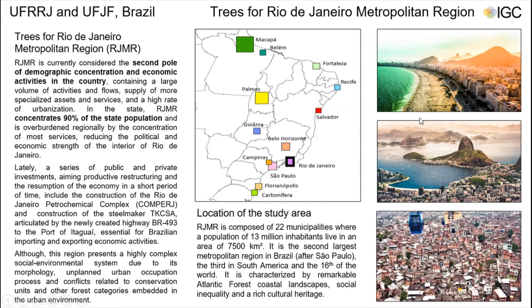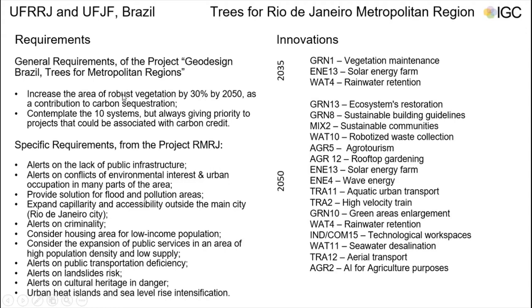Some of these pictures are worldwide famous in terms of tourism. In terms of requirements, our biggest goals were basically to increase vegetation by 30% by 2050, and to contemplate all 10 systems from the geodesign methodology. By 2035, projects were based on three main systems, and by 2050 there are increases of systems, as you can see here.